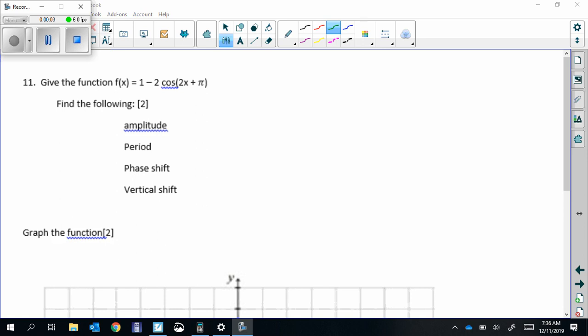When graphing sine or cosine, always start by looking at the parentheses. In this case, it says 2x plus pi. We need to factor out the 2, so it becomes just x plus whatever. When we factor out the 2 from pi, it becomes pi over 2.